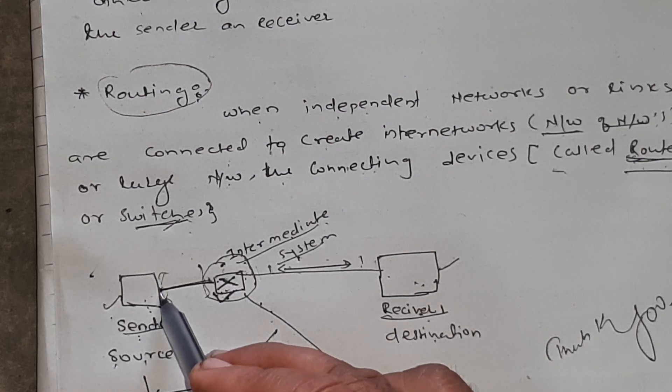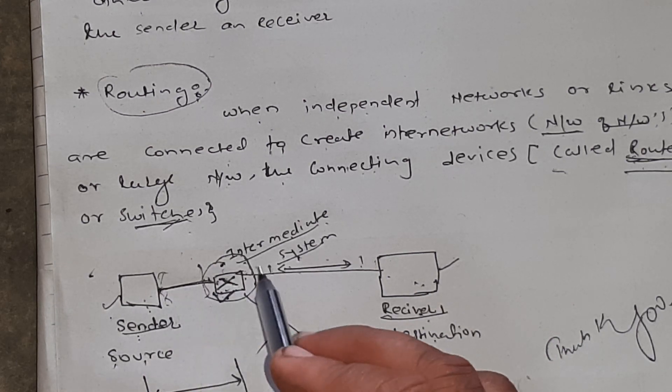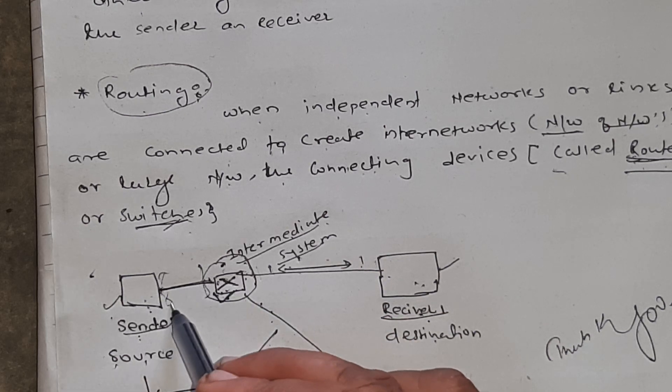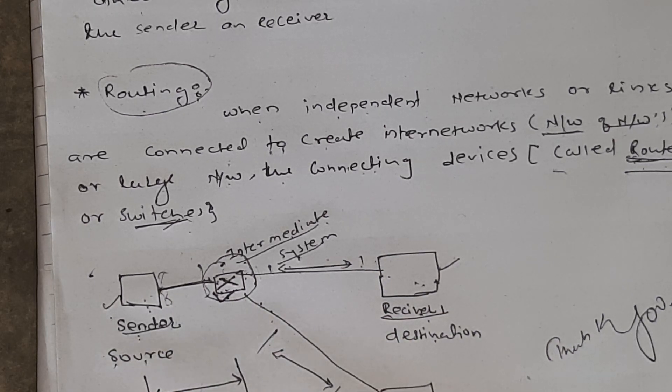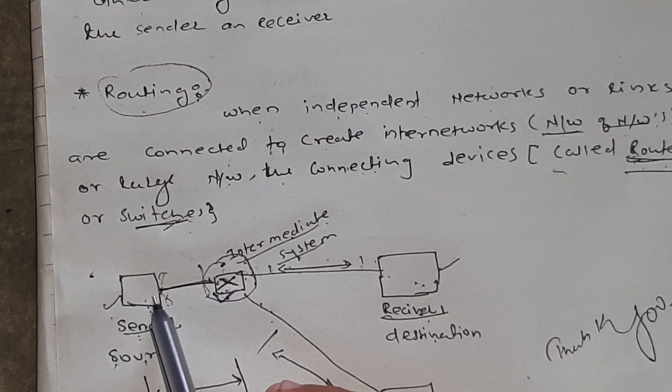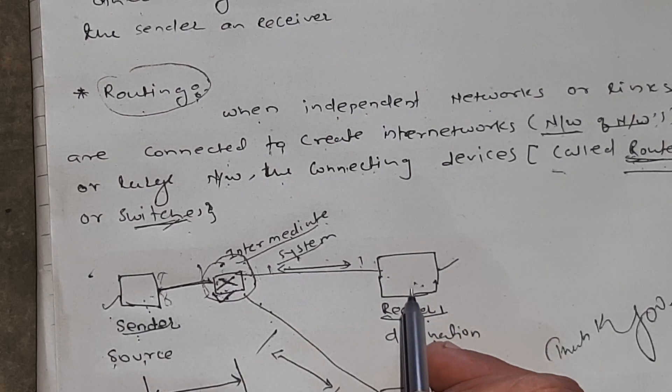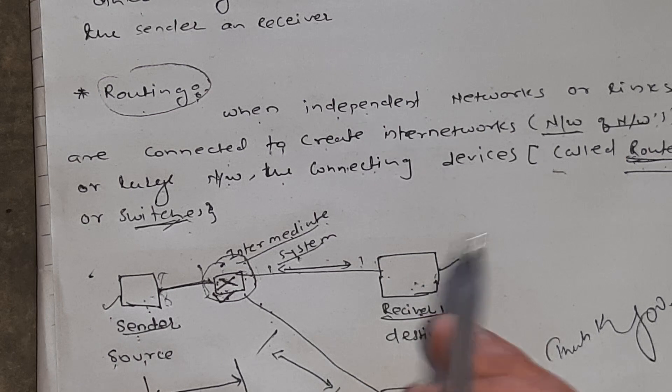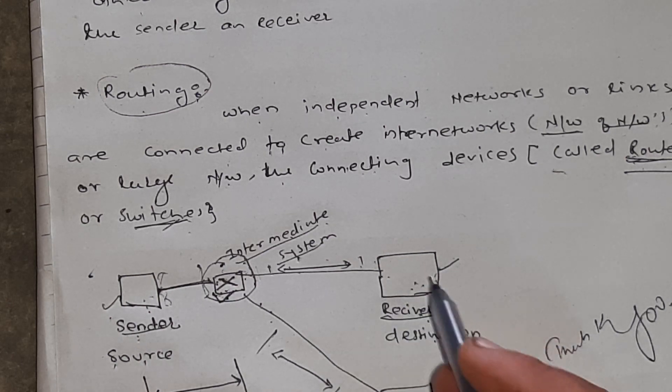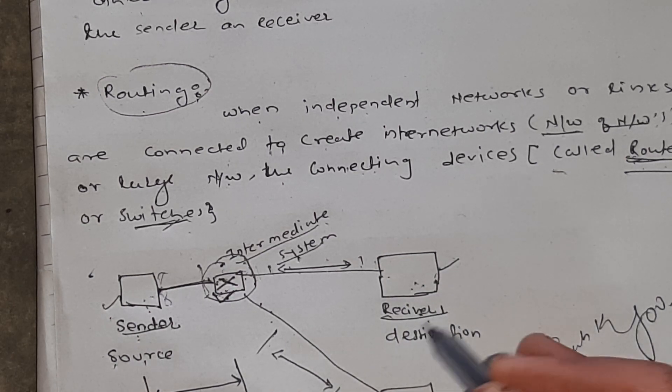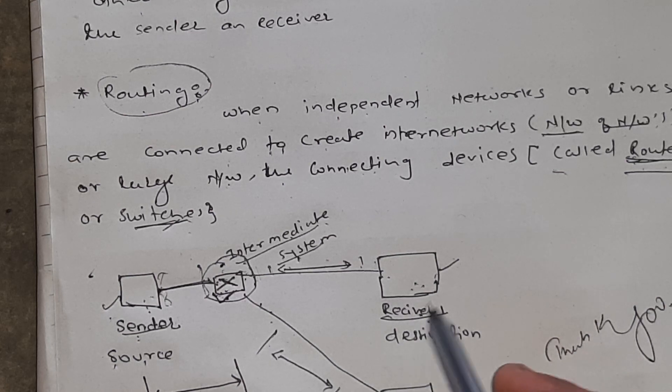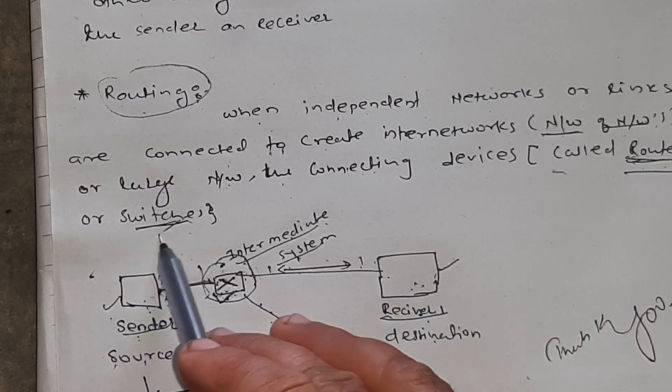So, here, the distance between source to router or router to receiver is called hop-to-hop delivery. The data travels from source to router or router to another machine or receiver, that is called hop-to-hop delivery. So, here, the data is traveling over the network with the help of routers and switches.